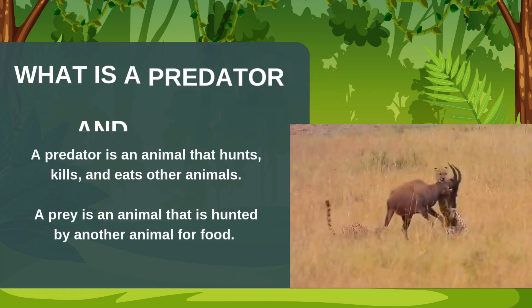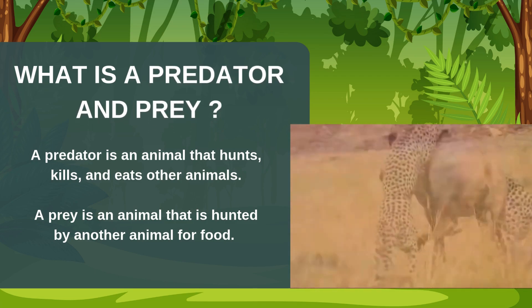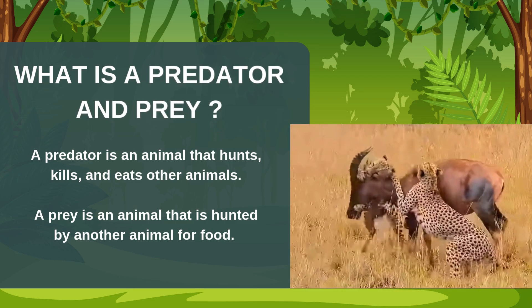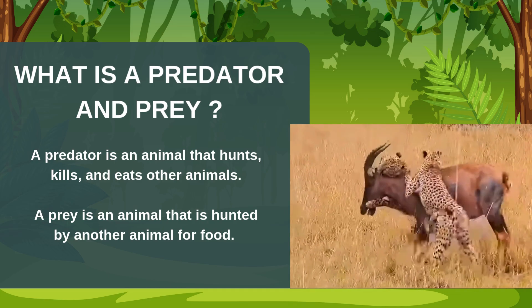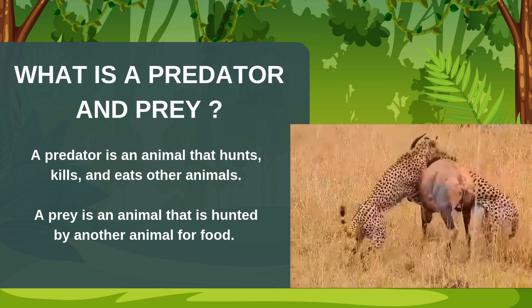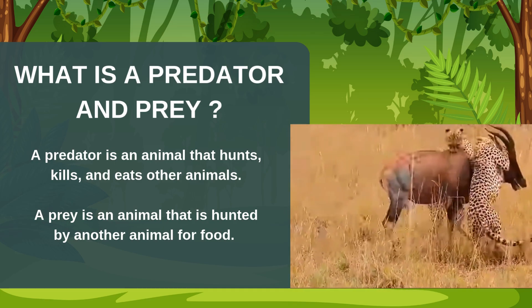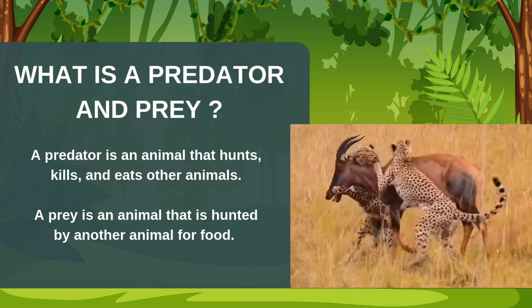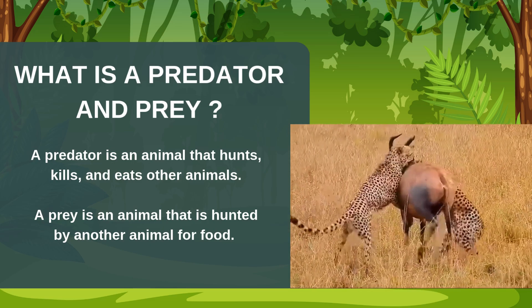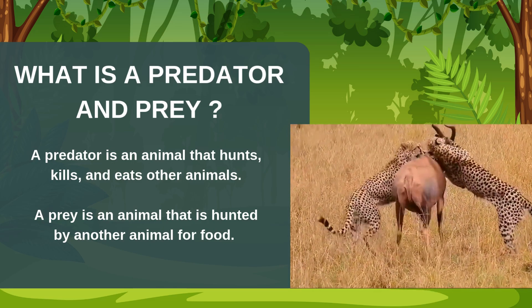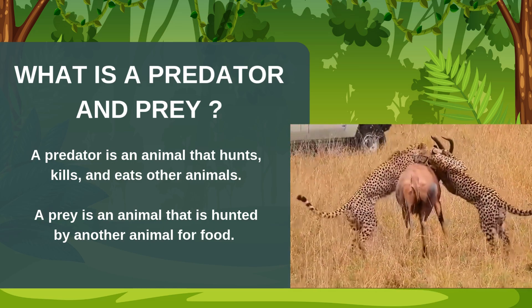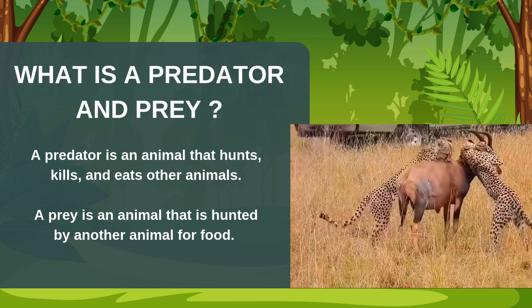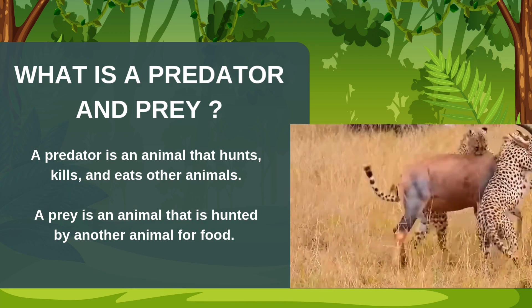What is a predator and prey? A predator is an animal that hunts, kills, and eats other animals. A prey is an animal that is hunted by another animal for food. Here, the cheetah is the predator as it hunts the bull, and the bull is the prey. These relationships of prey and predator are essential for maintaining balance in ecosystems and the flow of energy from one organism to another.